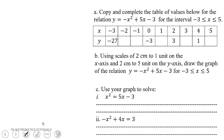Hello. Let us copy and complete a table of values for the relation y = -x² + 5x - 3 for the interval -3 ≤ x ≤ 5. Then, using scales of 2 centimeters to 1 unit on the x-axis and 2 centimeters to 5 units on the y-axis, we will draw the graph of that relation. We will then use the graph to solve x² = 5x - 3 and also -x² + 4x = 3. So let us begin.